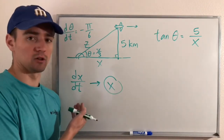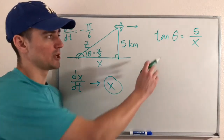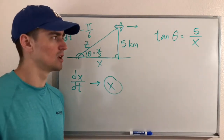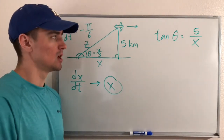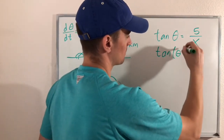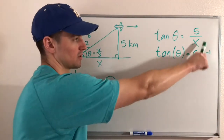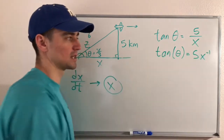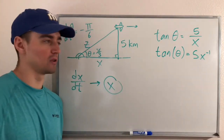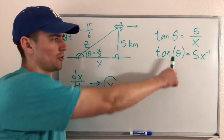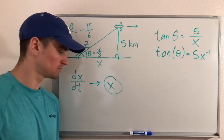Before moving to the next step, let's rewrite this to make differentiation easier. Instead of 5 over X — which would require the quotient rule — we can rewrite it as tangent of theta equals 5 times x to the negative first power. These are equivalent, but now we can use the power rule instead of the quotient rule. That's our equation for step two.